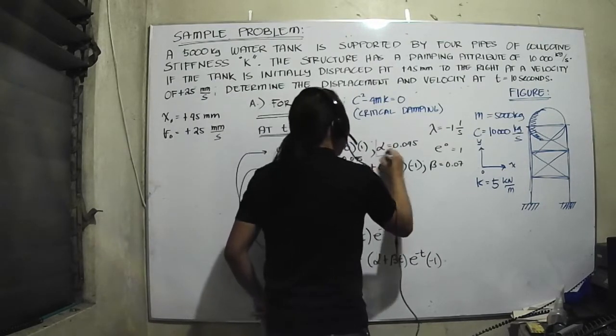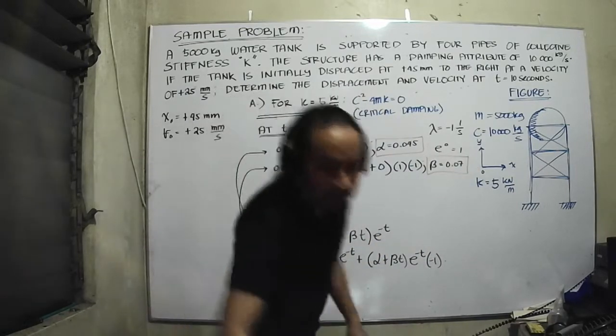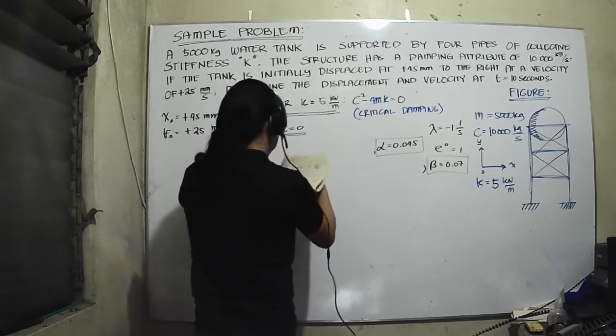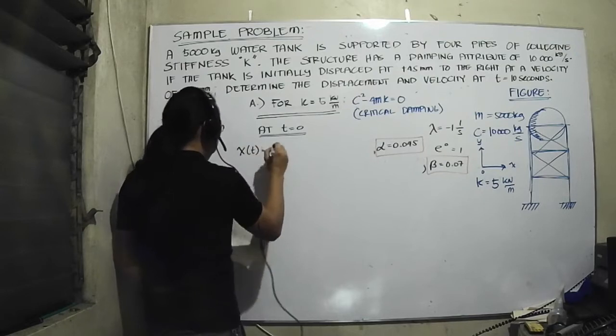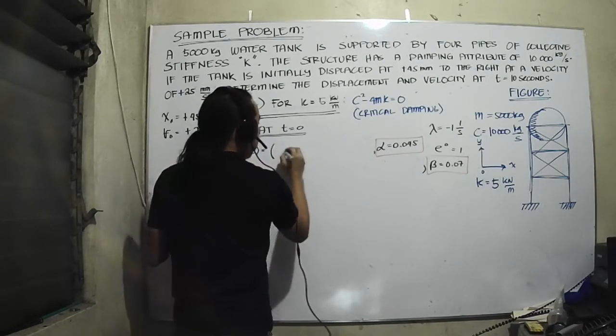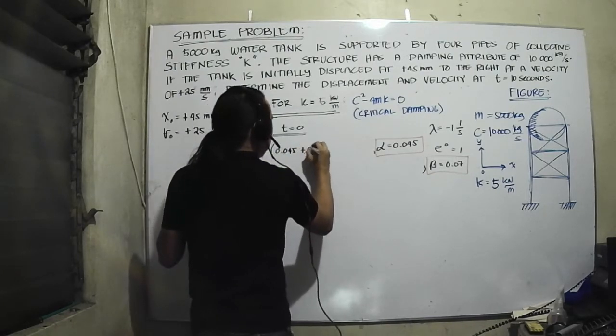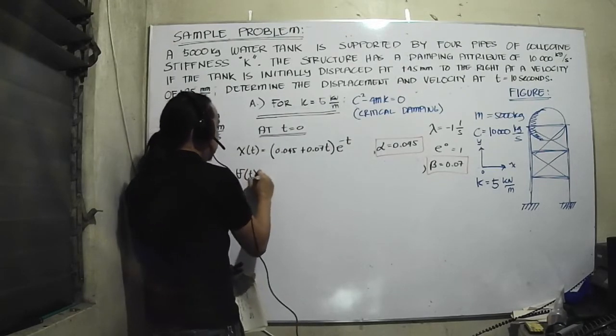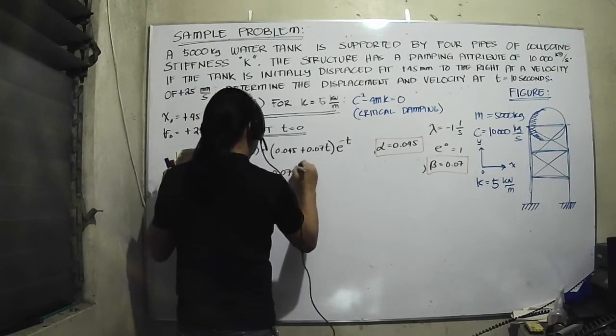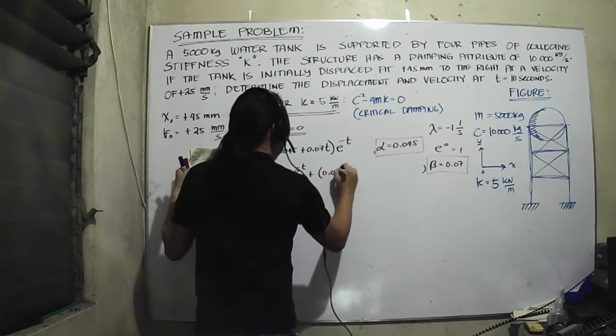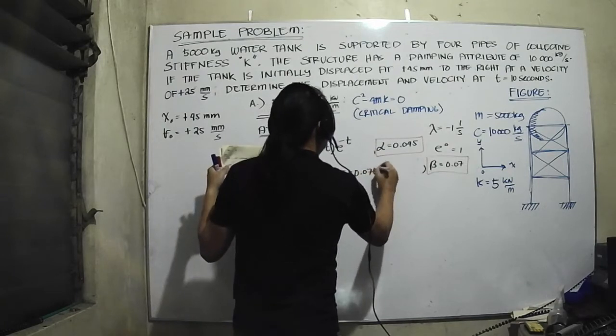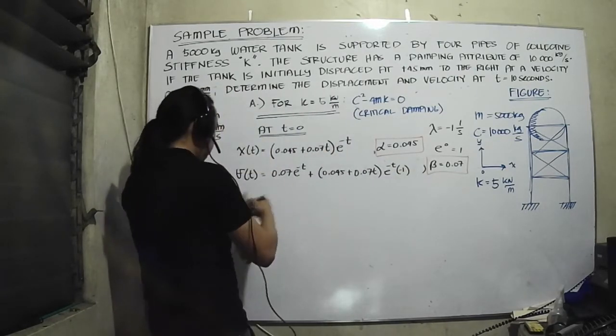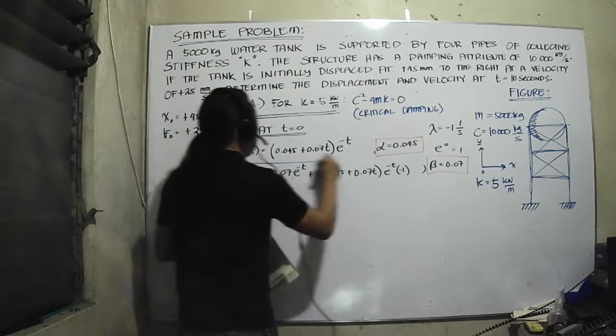These are our passing values. Let me encase this into a box. Allow me to make more space. We have our α and β now, I think we can now start writing the equations for x(t). Our expression is x(t) equals 0.045 plus 0.07t times e to the negative t, while our v(t) shall be equal to 0.07 e to the negative t plus (0.045 + 0.07t) multiplied by e to the power of negative t times negative 1.